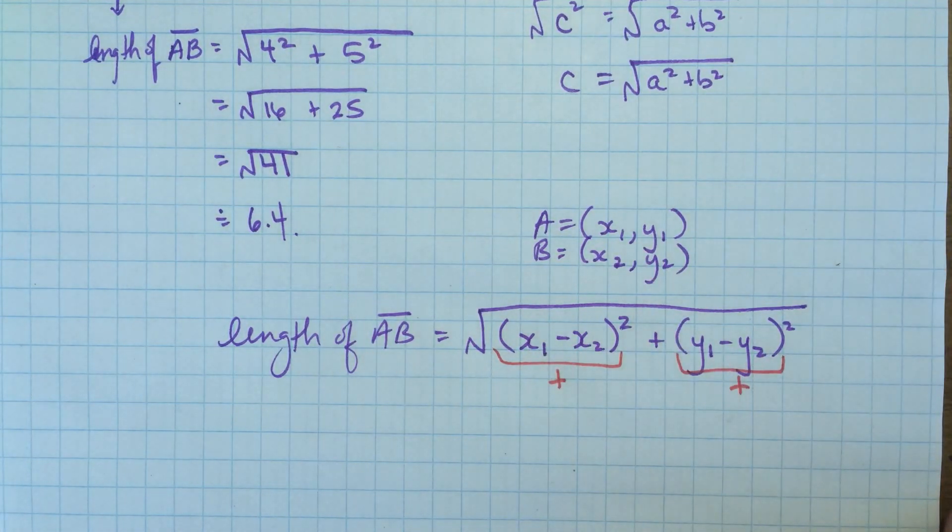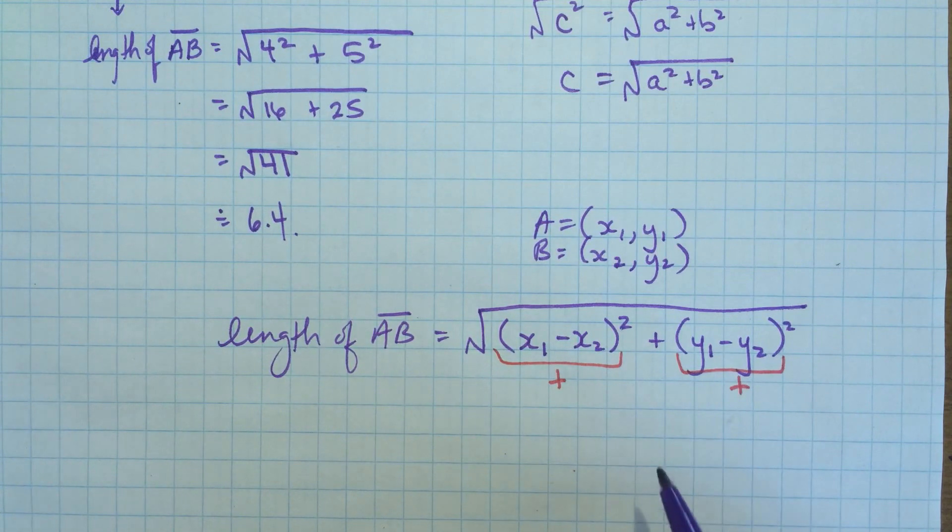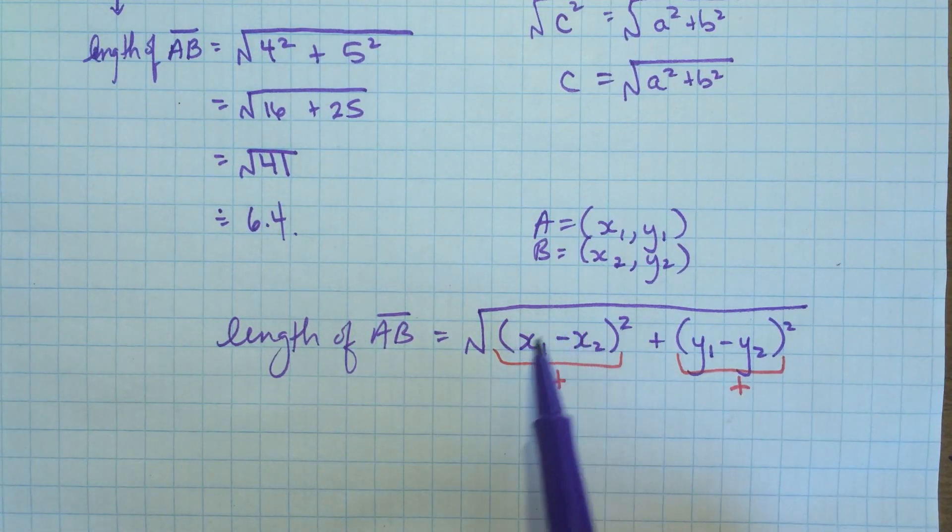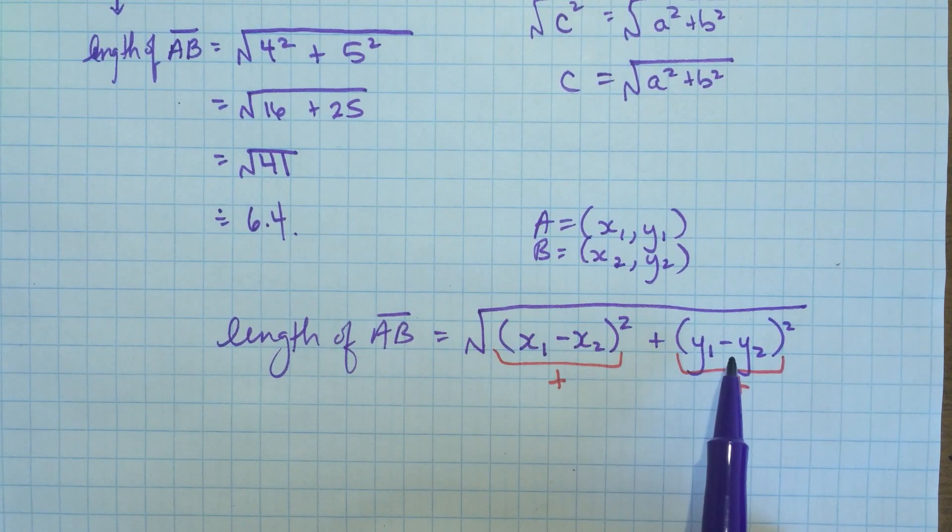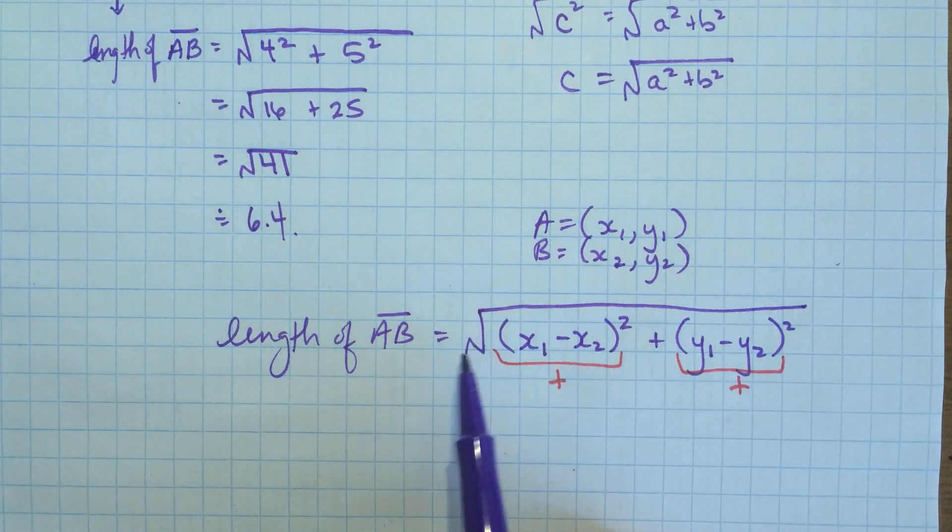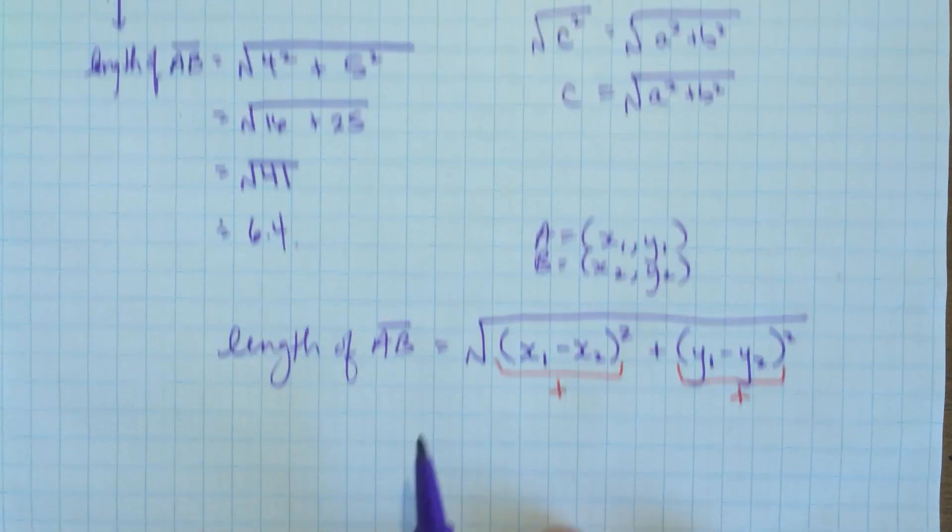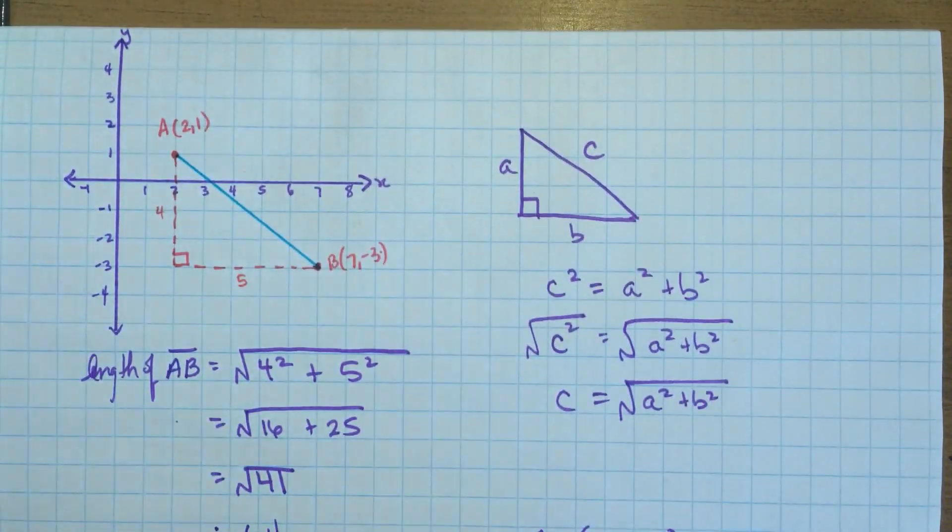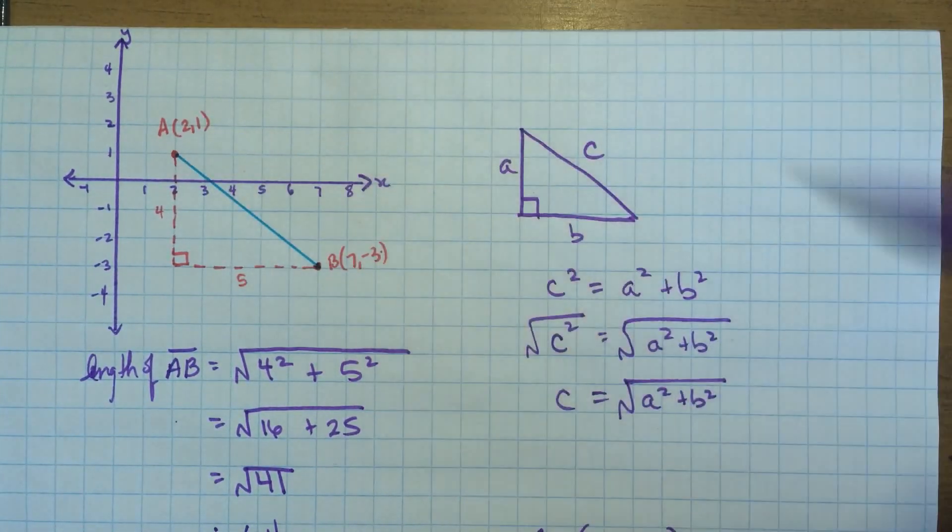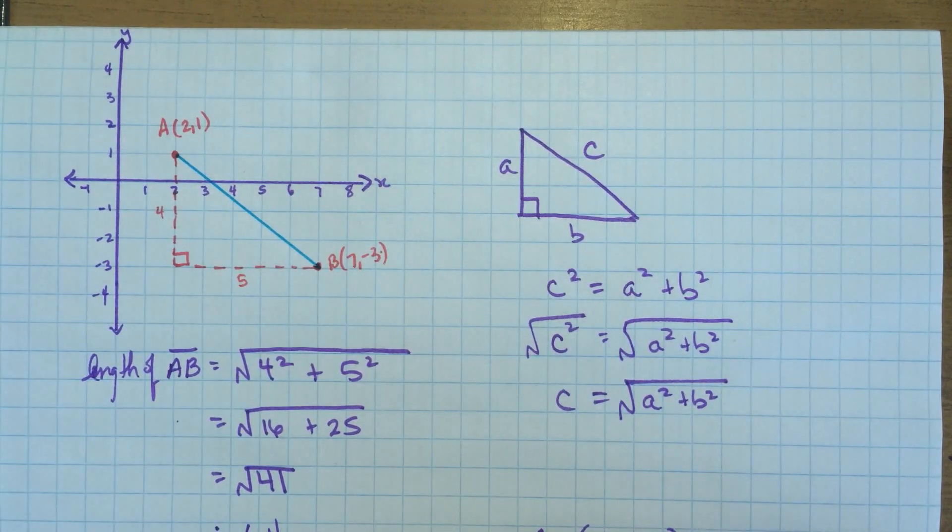Or depending on the values that you have, you might have lots of negative numbers in here. So, take the difference in the x's, the difference in the y's, square each of those, add them up, and take the square root, and that'll give you the length of the side, or the length of a line segment. And always think about it in the triangle, and you'll remember Pythagoras' theorem. Thanks.